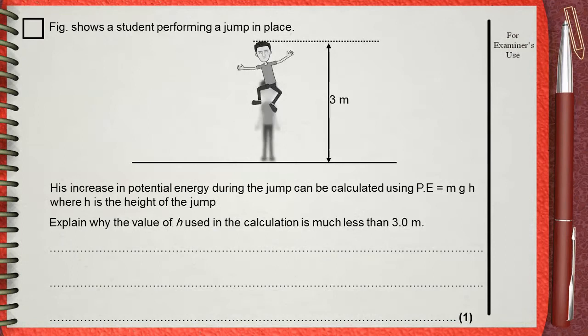Figure shows a student performing a jump in place. His increase in potential energy during the jump can be calculated using potential energy equals M G H, where H is the height of the jump. Explain why the value of H used in the calculation is much less than 3 meters.